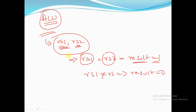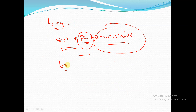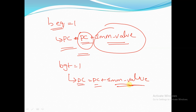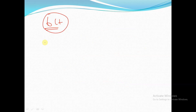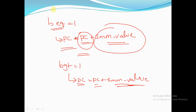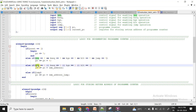The BGT signal is given from the data path unit to the top module, and from the top module to the instruction fetch unit. If BGT equals 1, the program counter is incremented by the immediate value provided in the instruction. This is how the BGT instruction is executed.